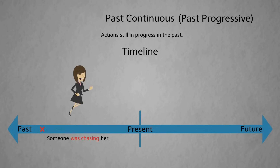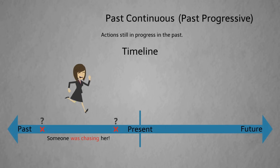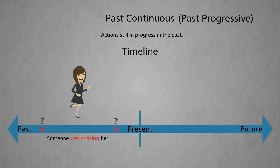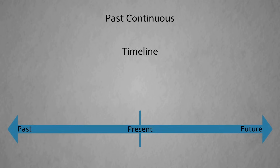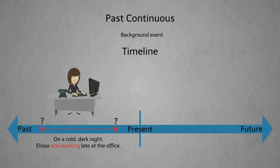Someone started chasing her sometime in the past, but we don't know when. We are talking about the whole period from start to finish. We can also use the past continuous for background events. For example, 'On a cold dark night, Alyssa was working late at the office.' This sentence sets the background and setting of the story.